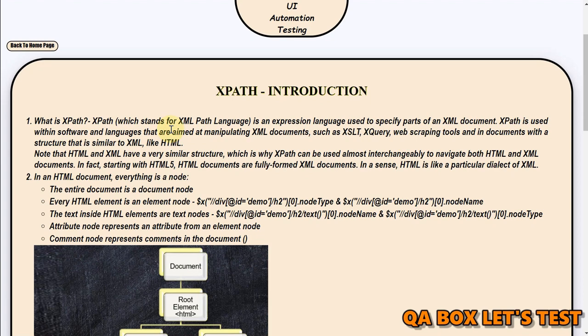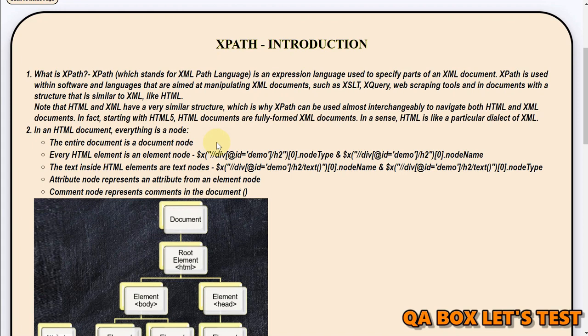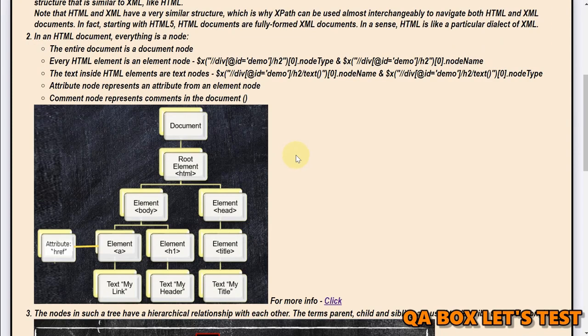So what is an HTML document? In an HTML document everything is a node. The entire document is the document node. Every HTML element is an element node. The text inside HTML elements are called text nodes. Then we have attribute nodes which represent the attribute from an element node. We also have comment nodes which are represented by comments in the document.